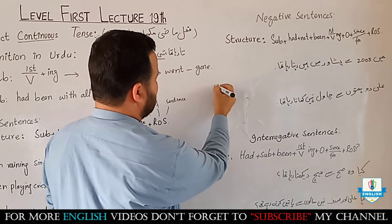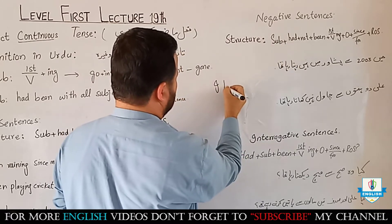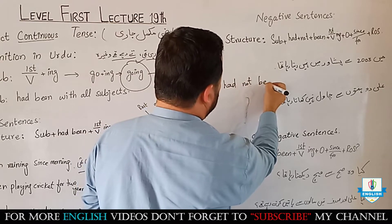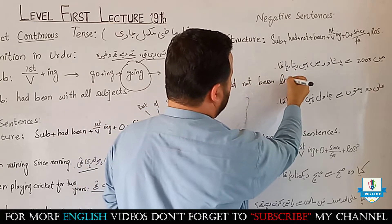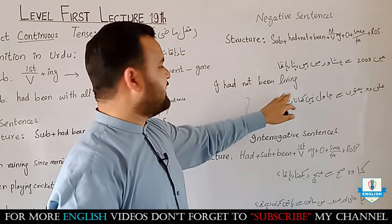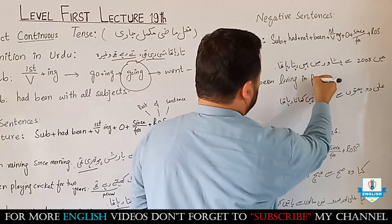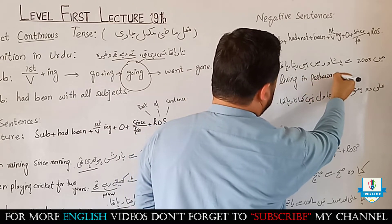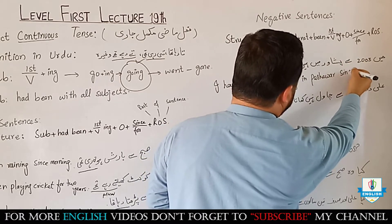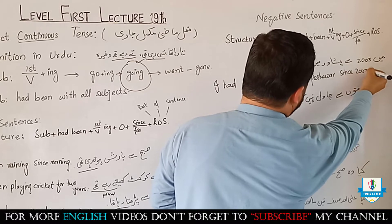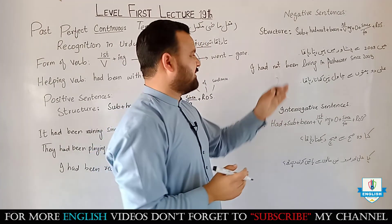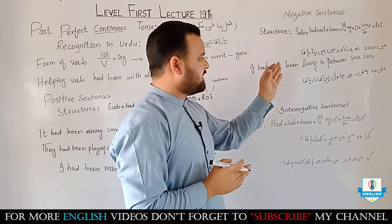Negative example: 'Main do saal pehle se Peshawar mein nahi rehta tha.' The sentence becomes: I had not been living in Peshawar since 2003. Note that 'Peshawar' — P should be capital, as it is a specific name of a city.